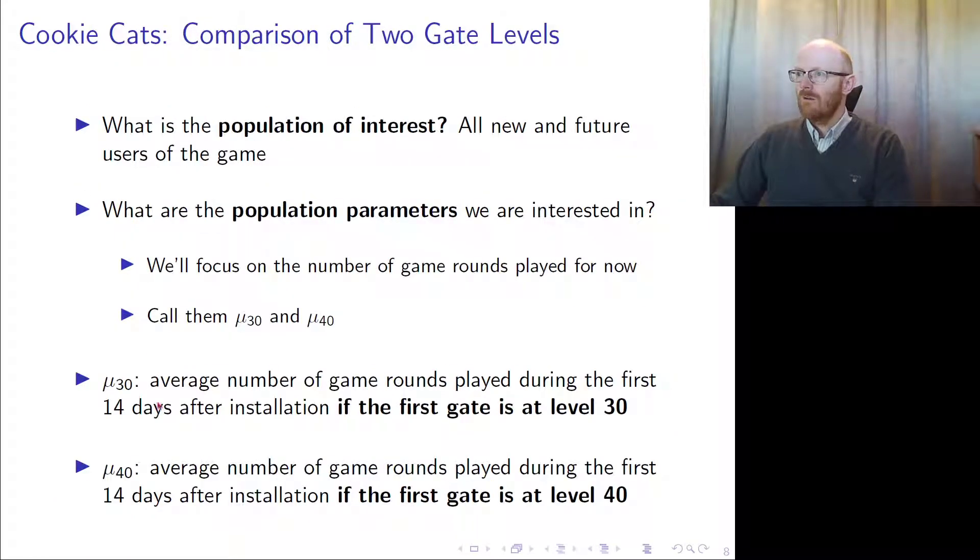What is the population of interest? All new and future users of the game. Why don't we include the old users? If you pick one sample in historic time and one in future time, the difference in time can hide a confounding variable.